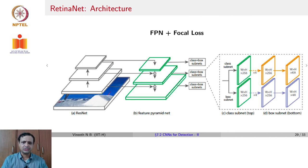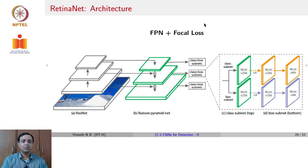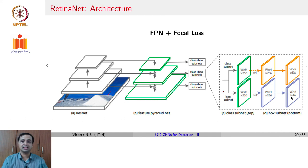The RetinaNet architecture otherwise uses FPN — the Feature Pyramid Network — along with the focal loss. The first part of the architecture is the feature pyramid network itself. Then for each of these scales, there is a classification subnetwork and a bounding box regression subnetwork, where the classification subnetwork uses the focal loss to learn.